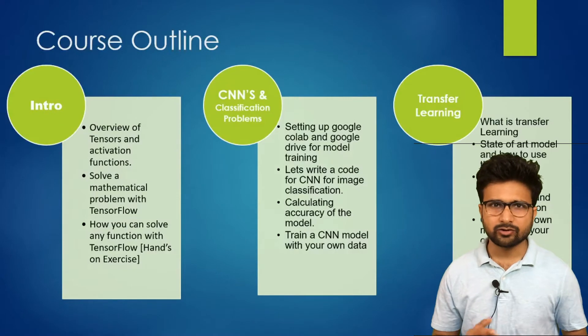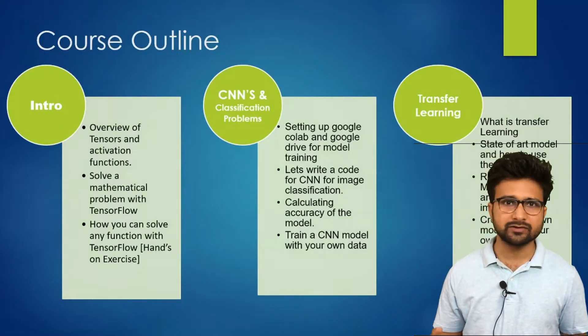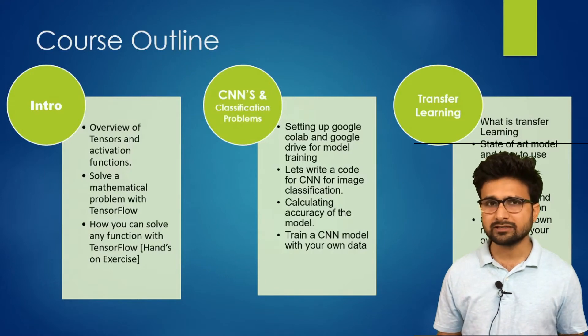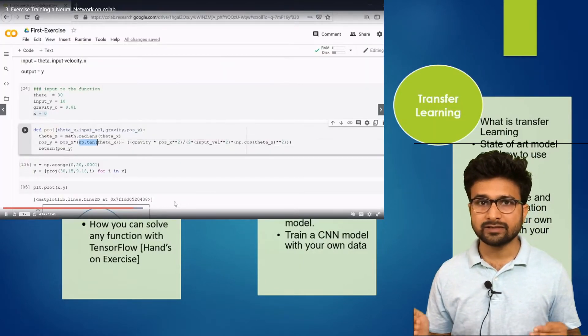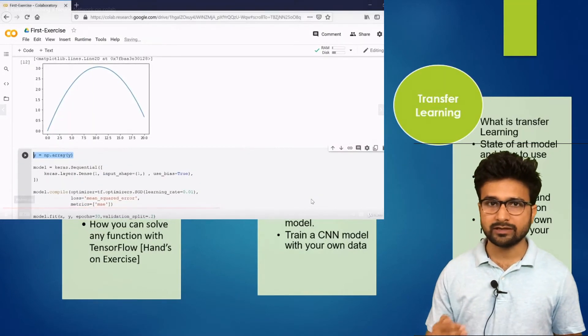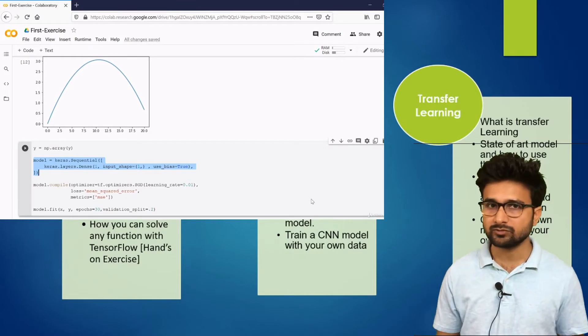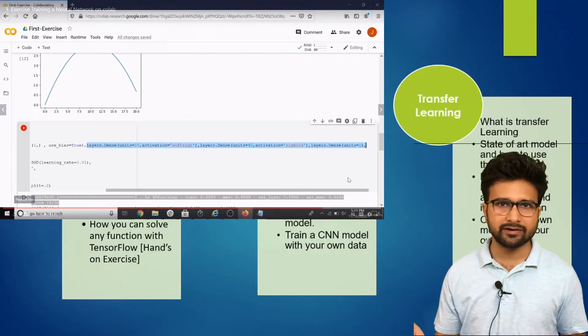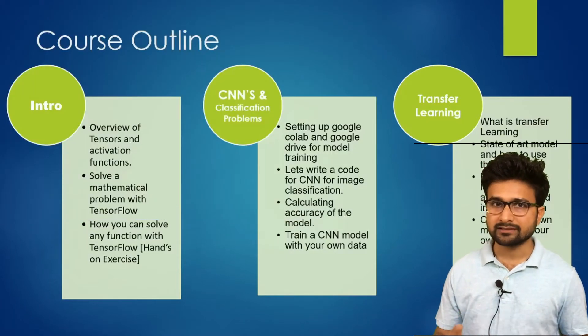We will start with the introductory part and try to understand what are tensors and what are activation functions, some of the basics of computer vision. And then we will solve a real-life physics equation with help of TensorFlow. So that you will have an idea in case you get any function, you will be able to apply TensorFlow to solve out that function. And that will be a hands-on exercise.